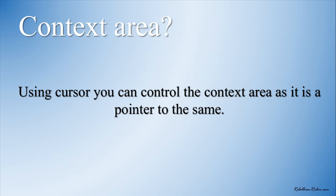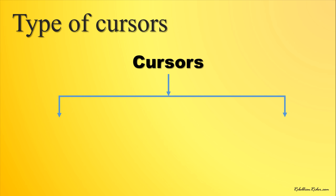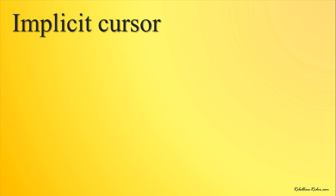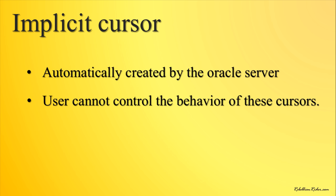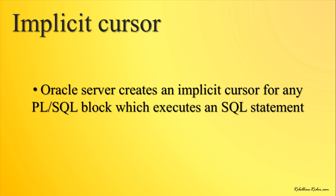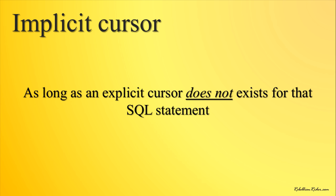There are two types of Cursors in Oracle Database: Implicit Cursor and Explicit Cursor. Implicit Cursors are automatically created by the Oracle Server every time an SQL DML statement is executed. The user cannot control the behavior of these cursors. Oracle Server creates an implicit cursor in the background for any PL/SQL block which executes an SQL statement, as long as an explicit cursor does not exist for that statement.